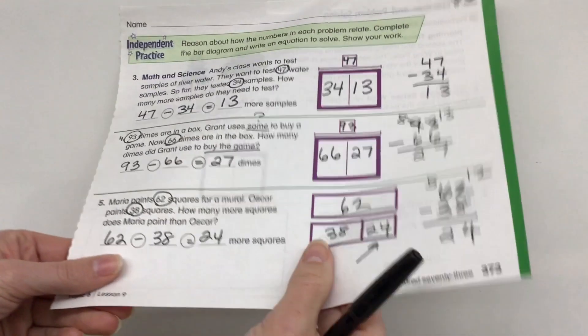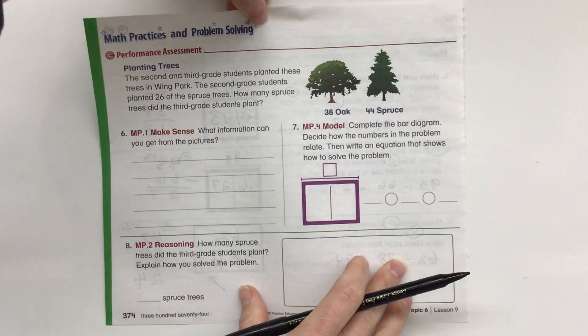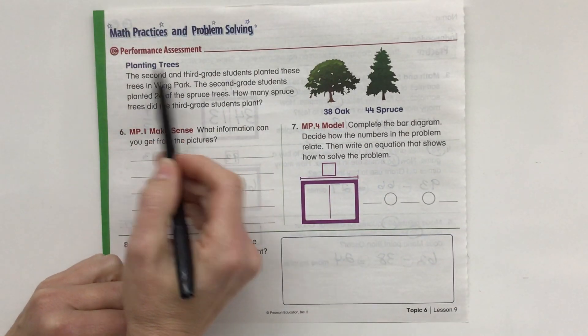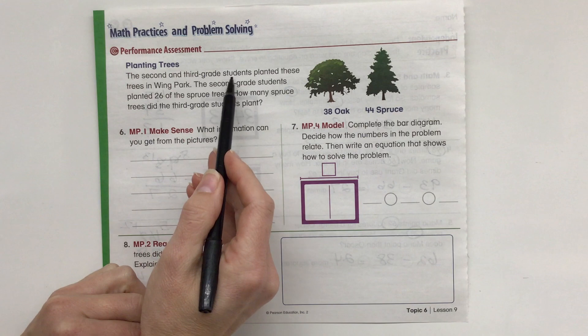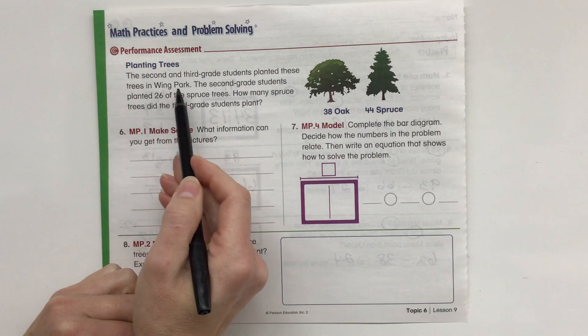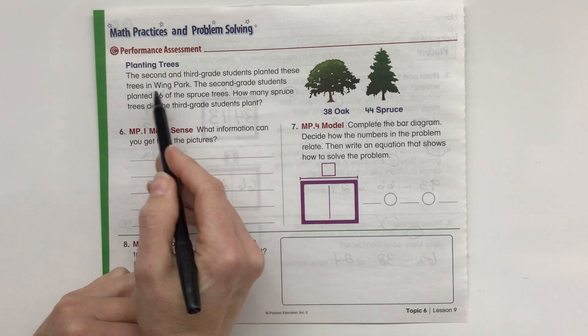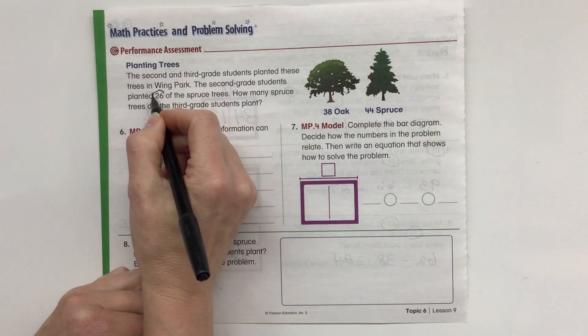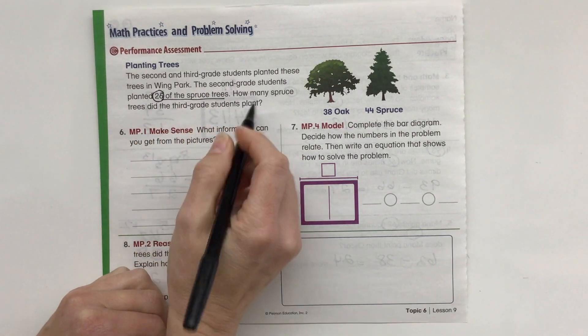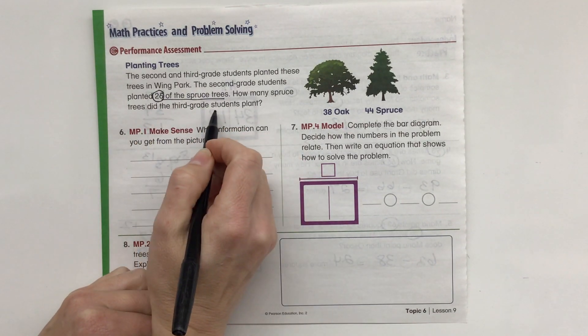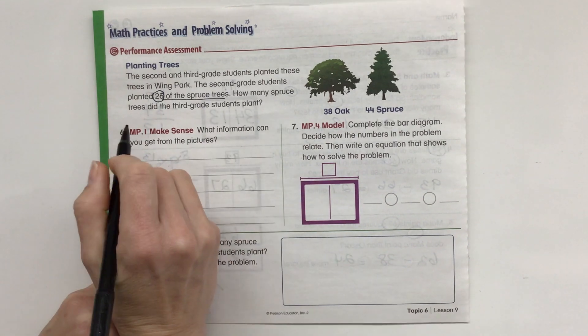All right, let's go into the back side. This is our performance assessment. Planting trees. The second and third grade students planted these trees in Wing Park. The second grade students planted 26 of the spruce trees. How many spruce trees did the third graders plant?